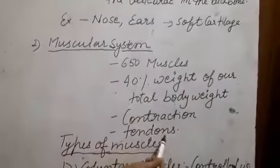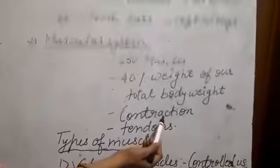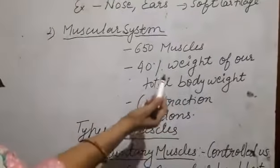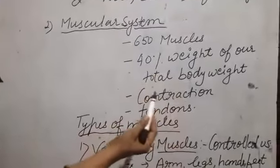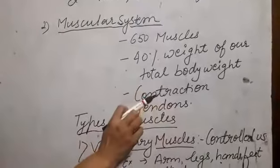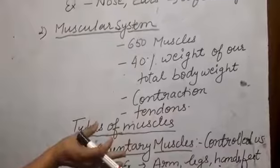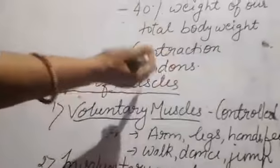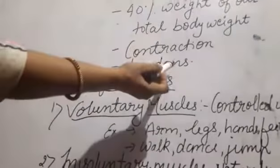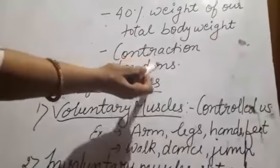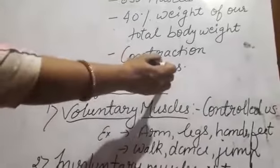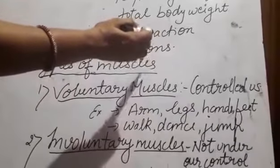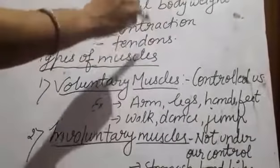One point is contraction and tendons. Contraction means muscles shorten during activity. Muscles are attached to bones by a special kind of tough elastic cord called tendons. These tendons are present in our muscles.